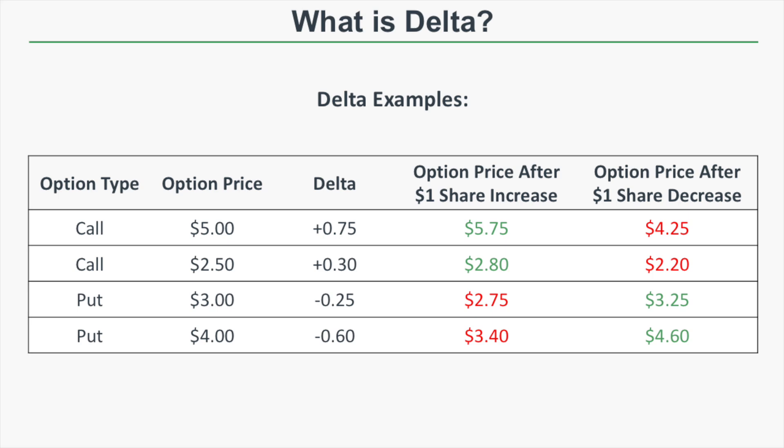Let's start with a call option that is initially priced at $5 with a Delta of positive 0.75. That positive Delta indicates that the option's price is expected to rise with the stock price and fall with it. If the stock price rises $1, a Delta of 0.75 means that $5 option is expected to be worth $5.75. After a $1 decrease in share price, it's expected to be worth $5 minus $0.75, or $4.25.